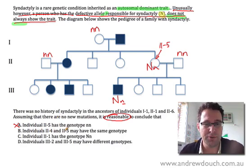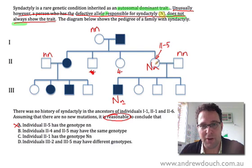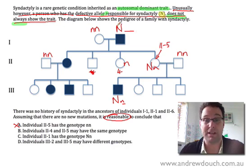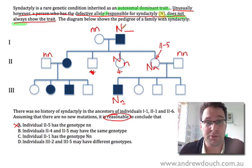What about the second one? Individual 2-4 and 2-5 may have the same genotype. So here's 2-4. Well, 2-4, of course, must have got a little n from her mum, and dad has the genotype big N something. So there's a 50% chance, in fact, that this man could have given the big N to her. Now it's possible that she could be big N, little n, and be another one of these people who has the allele for syndactyly but doesn't show it. It's also possible that she got a little n from dad, and she's little n, little n. We just can't really know.